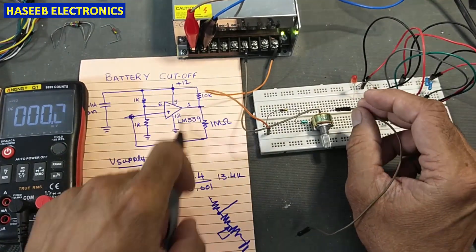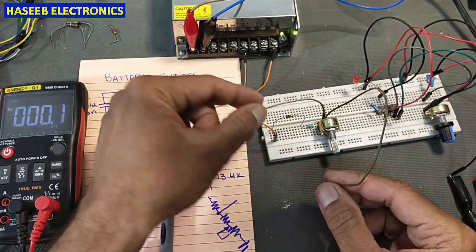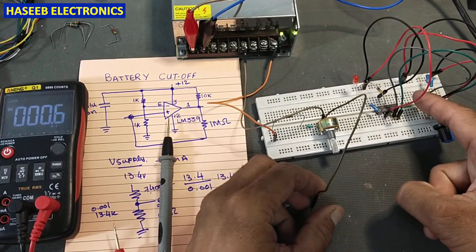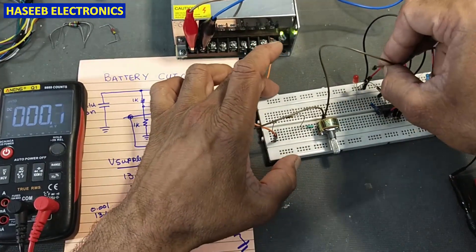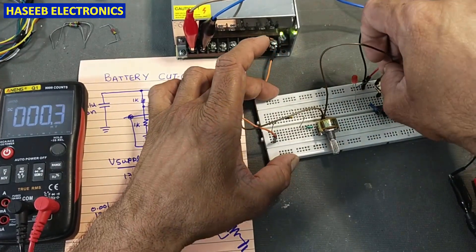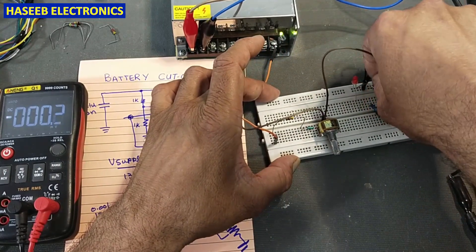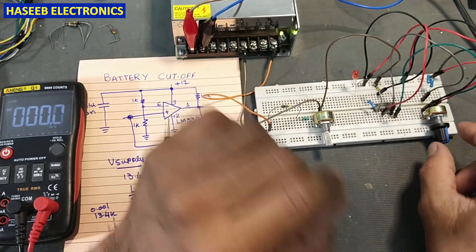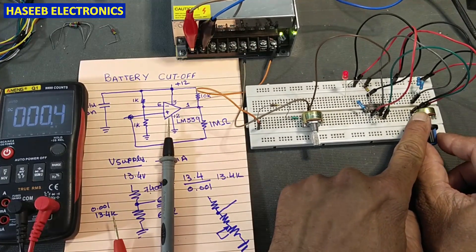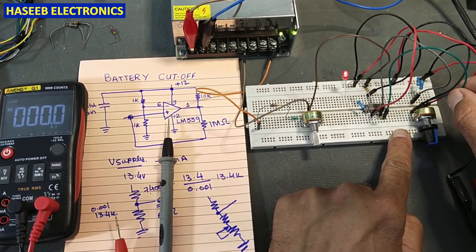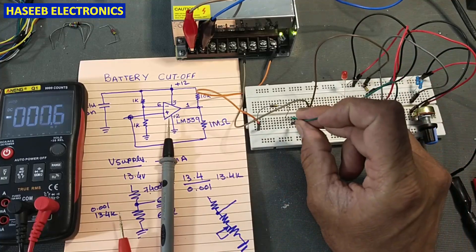Now we need to connect the circuit properly. The return for the battery — the battery low line — must connect to the comparator ground line. This is the first requirement: we must combine the return paths. Then we connect the sensing input pin to the voltage divider output.